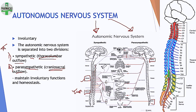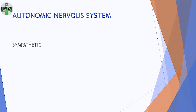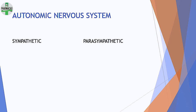If you get a question on differentiation between sympathetic and parasympathetic, this first point about thoracolumbar vs craniosacral outflow is very important. All of these, of course, maintain involuntary functions and homeostasis — both sympathetic and parasympathetic are involved in involuntary functions. Their functions are polar opposites of each other.